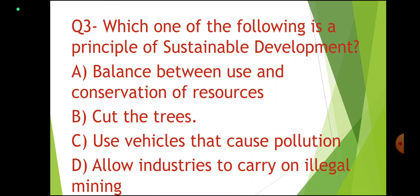Question number 3: Which one of the following is a principle of Sustainable Development? Options: Balance between use and conservation of resources; Cut the trees; Use vehicles that cause pollution; Allow industries to carry on illegal mines. Correct answer: Balance between use and conservation of resources.